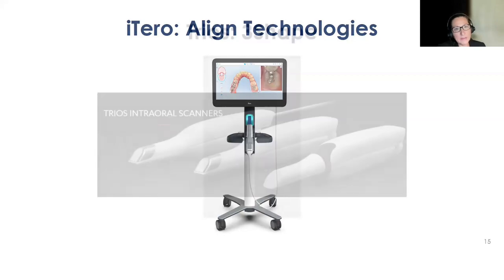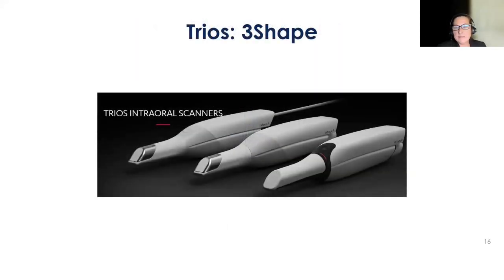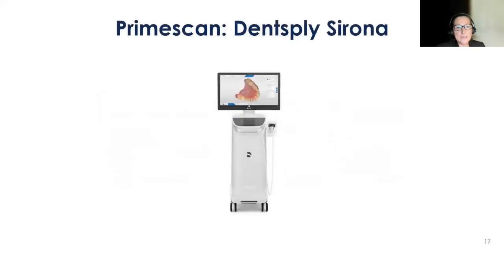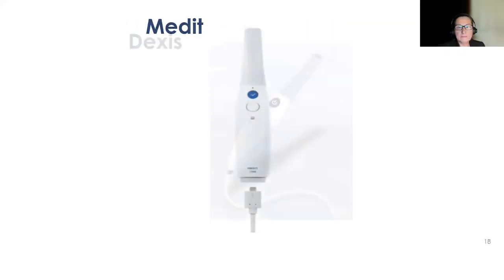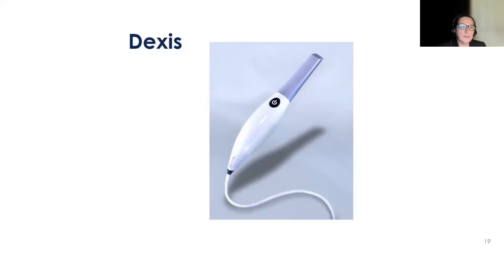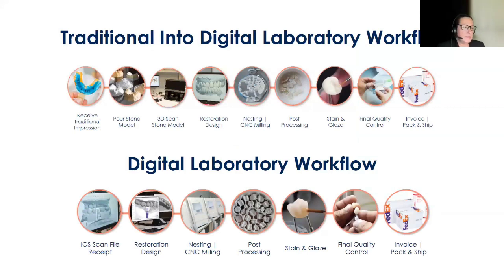Trios has a couple of different generations, including a cordless version — the new one doesn't require calibration, which is nice. PrimeScan now has a PrimeLab desktop option so you don't need the huge footprint. There's also Medit, Dexis, and many others — I heard there's a new one called Panda coming out. There are fewer steps from traditional to a digital laboratory workflow, as you can see on this slide.